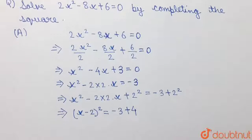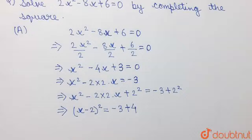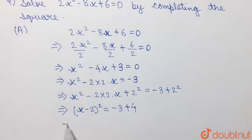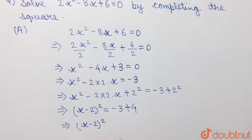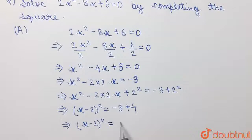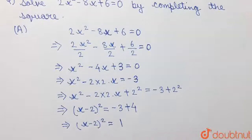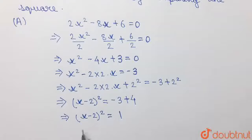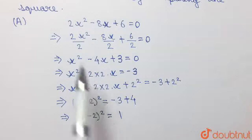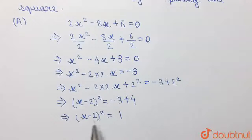So now the entire term on the left hand side can be written as x minus 2, whole squared, and on the right hand side we have minus 3 plus 2 squared which is 4. So this can be written as x minus 2, whole squared equals minus 3 plus 4, which is plus 1. So we have completed the square: x minus 2, whole squared is equal to 1.